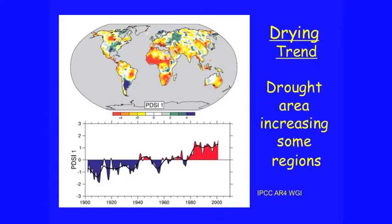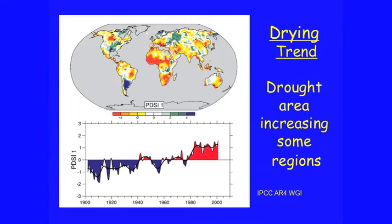There's been a tendency to increase in the area affected by drought, which is shown in red areas. The point is we're getting droughtier in areas which are already dry.